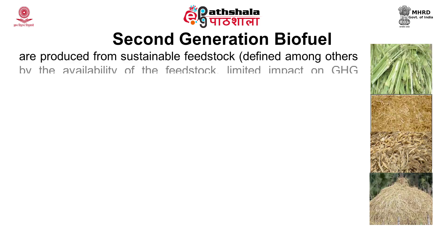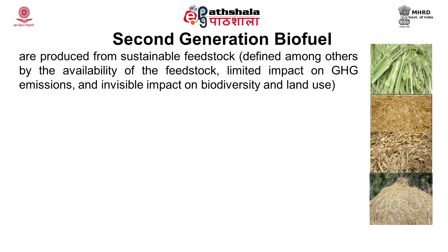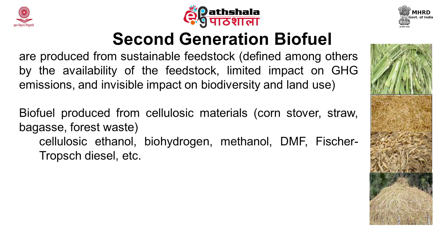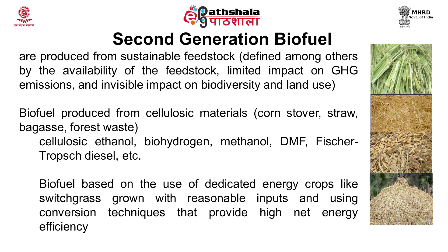Second generation biofuel are produced from sustainable feedstock — sustainable meaning highly available, with limited impact on greenhouse gas emissions and minimal impact on biodiversity and land use. These are produced from cellulosic material such as corn stover, straw, bagasse, and forest waste. Examples are cellulosic ethanol, biohydrogen, methanol, and Fischer-Tropsch diesel. Biofuel based on dedicated energy crops like switchgrass, grown with reasonable inputs and using high net energy efficiency conversion techniques, also comes under second generation biofuel.